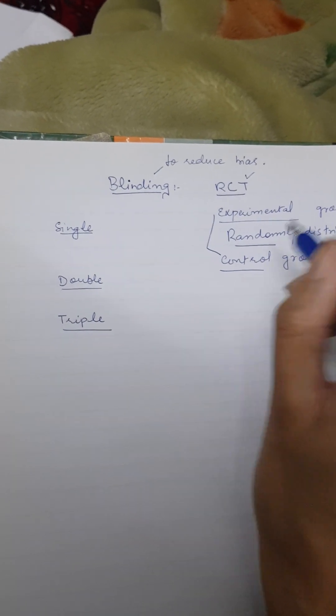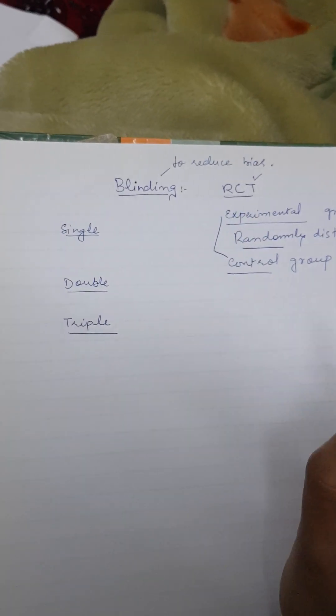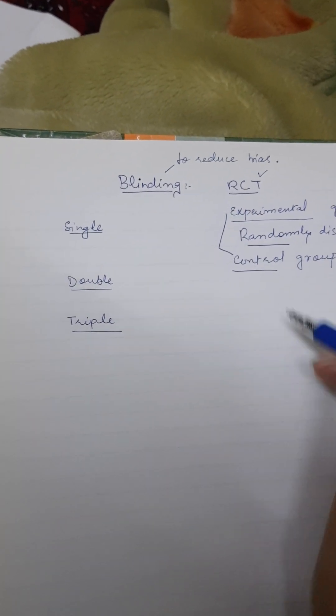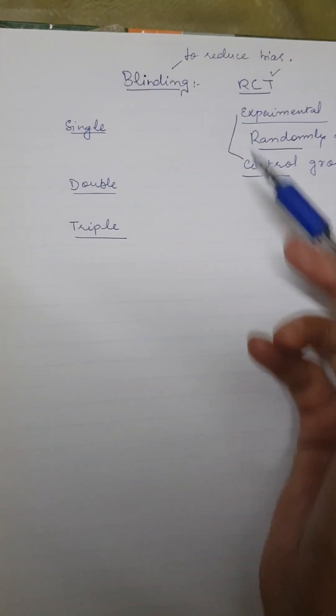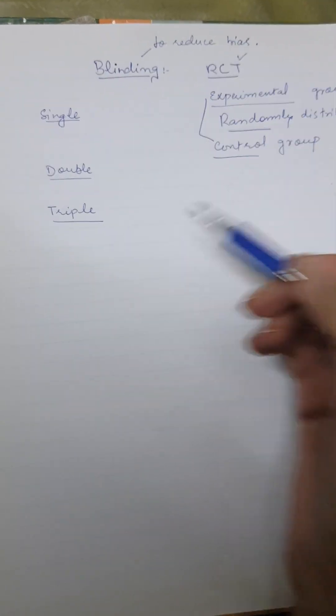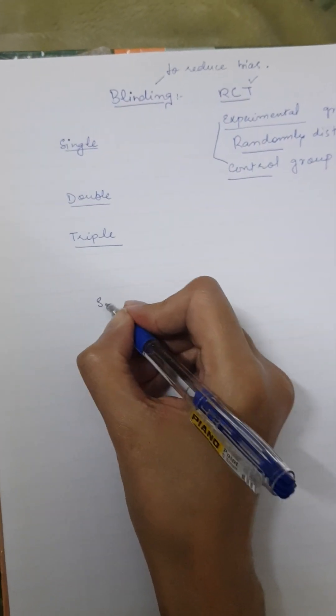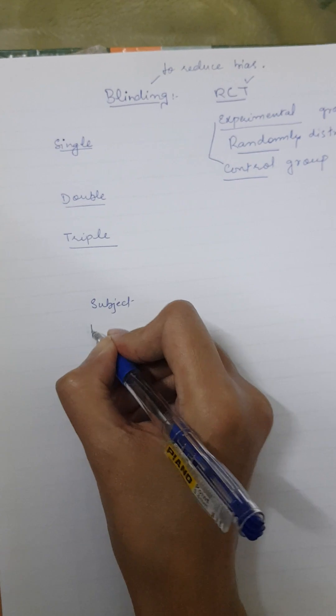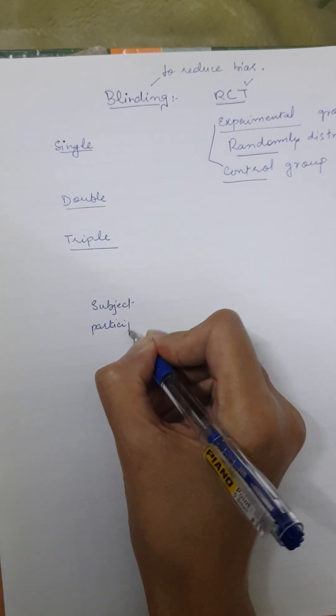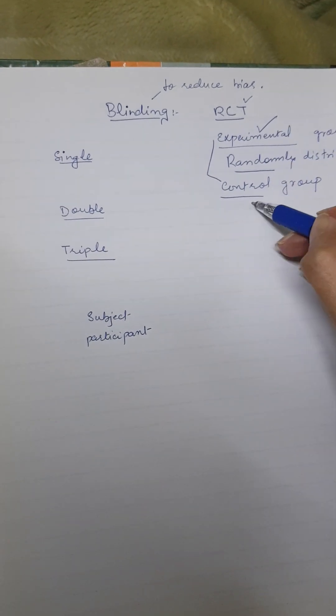There should be a control group and there should be a random distribution among the experimental and the control groups. That is the randomized control trial and true experimental. We have our subject or we can also say the participant of the research who have been randomly divided into the experimental and control group.